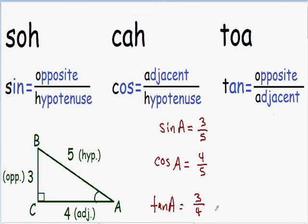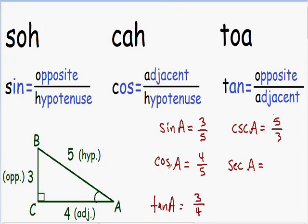Once you have these three basic trig functions, it's really easy to find the last three. For the cosecant of A, you just flip the sine of A. Since the sine of A is 3 over 5, the cosecant of A is 5 over 3. For the secant of A, you flip the cosine. Since the cosine of A is 4 over 5, the secant of A is 5 over 4. Finally, for the cotangent of A, you flip the tangent. Since the tangent of A is 3 over 4, the cotangent of A is 4 over 3.